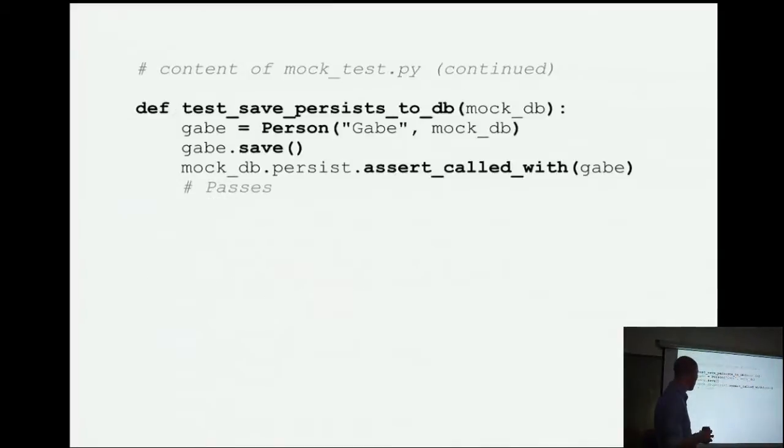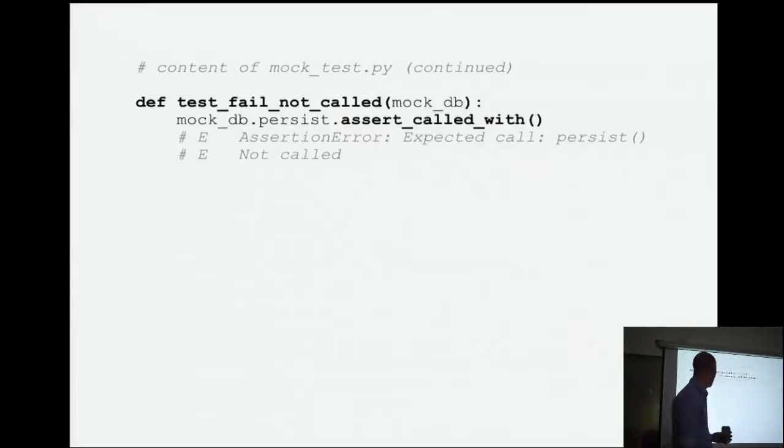So, that's the setup. That's our fixture. Here's our test. So, test say persisted DB. I'm injecting my mock_DB fixture in there. So, I'm going to make a person. And I'm going to pass that mock_DB into my person, right? Because that's how I constructed my person. I'm going to call save, and then I'm going to say, Okay, hey mock_DB, your persist method. Please assert that you are called with Gabe. Does that make sense to everyone? And that'll pass. So, there's no point in me showing you passing test output because it'll just look like a dot and it'll say test passed. But let's look at a failing test. So, what if I inject my mock_DB into this test. And remember, this is a different test than my previous one. So, there's no shared side effects between them. And I just say, hey mock_DB, persist. Assert you were called with nothing, right? I can just say, that's basically like assert you were called.